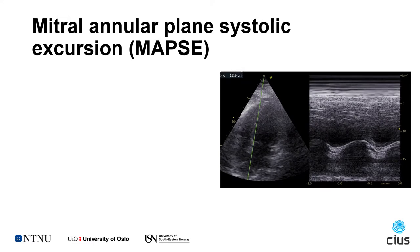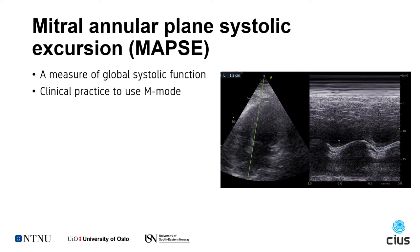Mitral annular plane systolic excursion, or MAPSE for short, is a measure of global systolic function of the left ventricle of the heart. Current clinical practice is to use M-mode imaging to measure MAPSE. This is done by setting an angle through the annulus to create an M-mode image of the annulus. An operator can then measure MAPSE manually as the distance of the annulus in end-diastole to end-systole. This is then repeated for the other side of the heart.